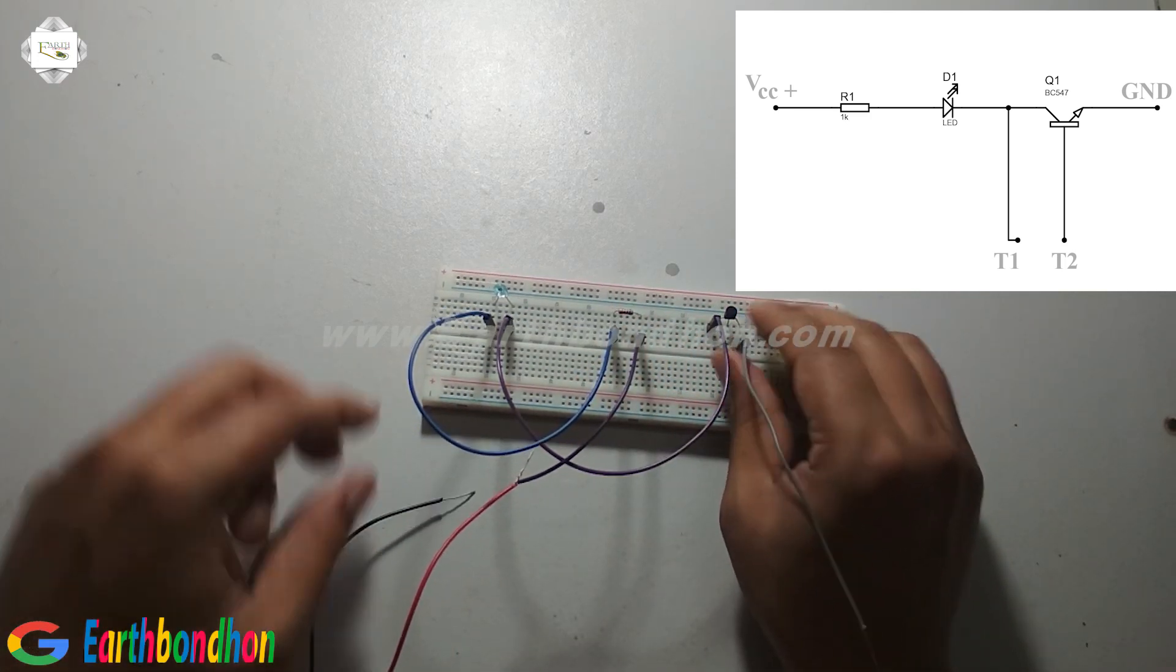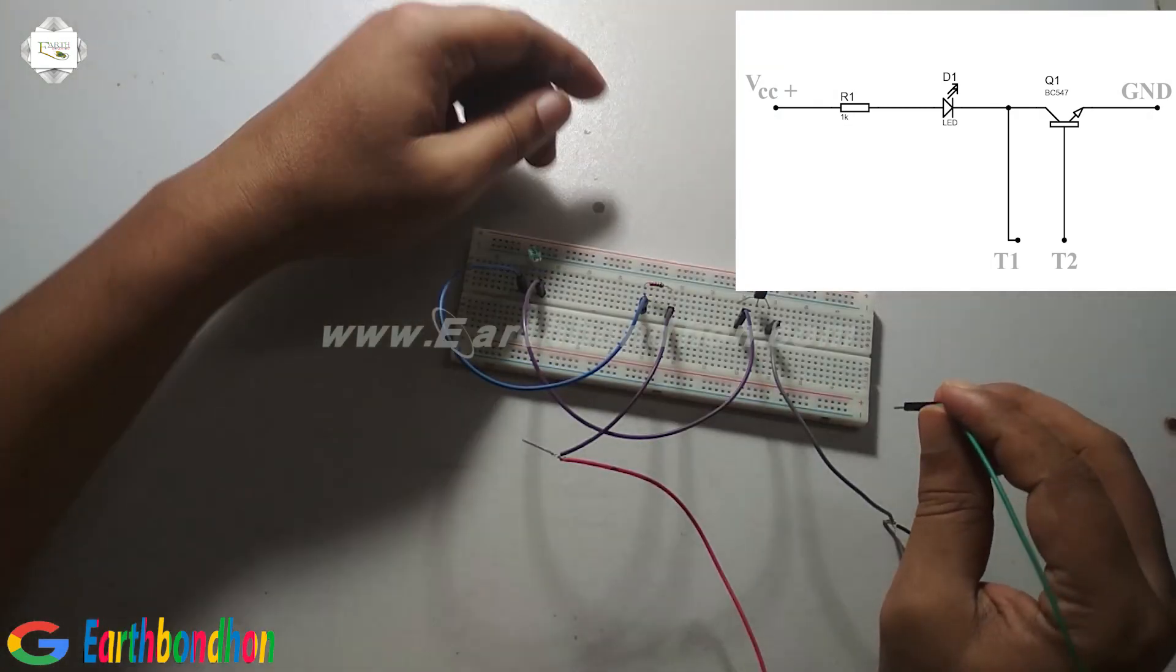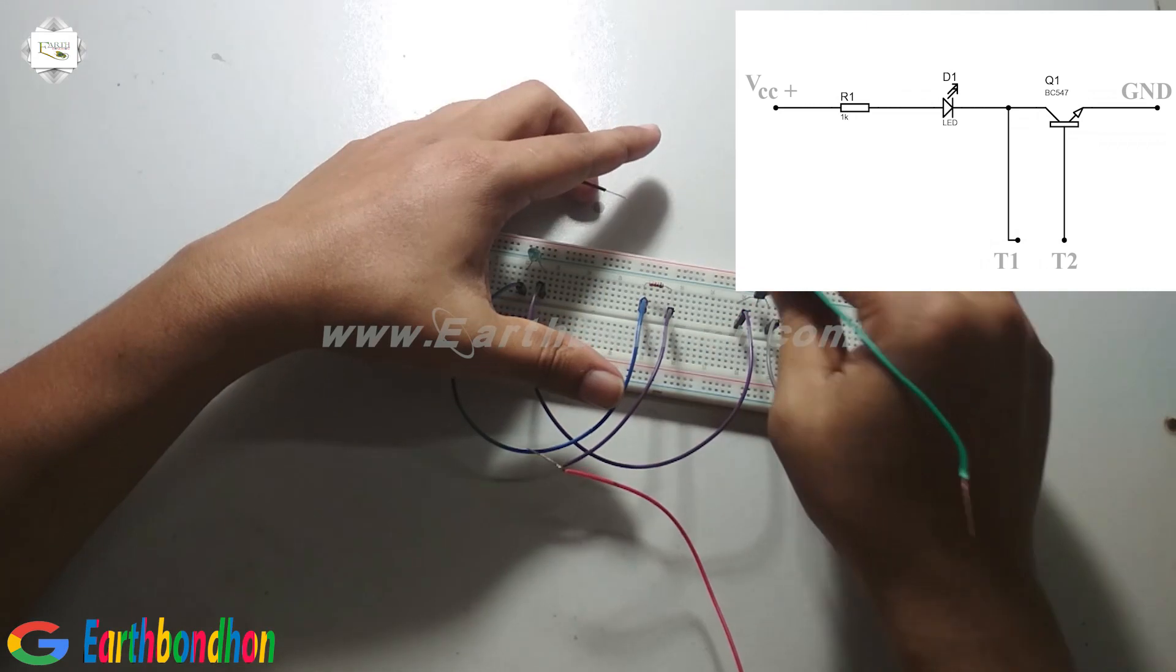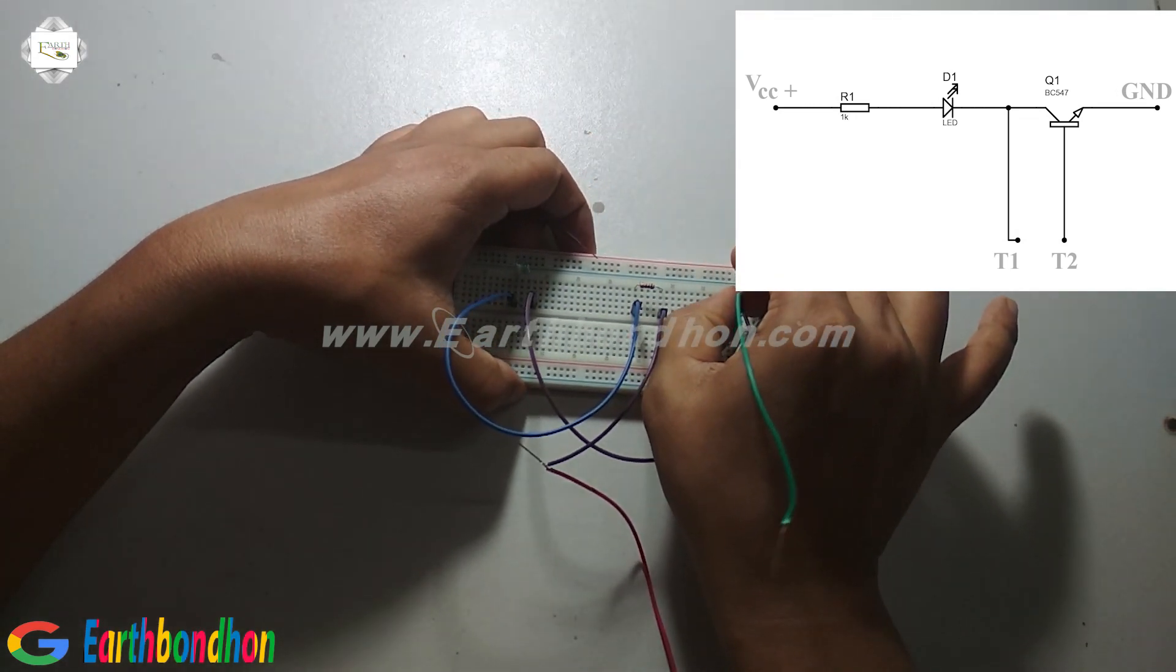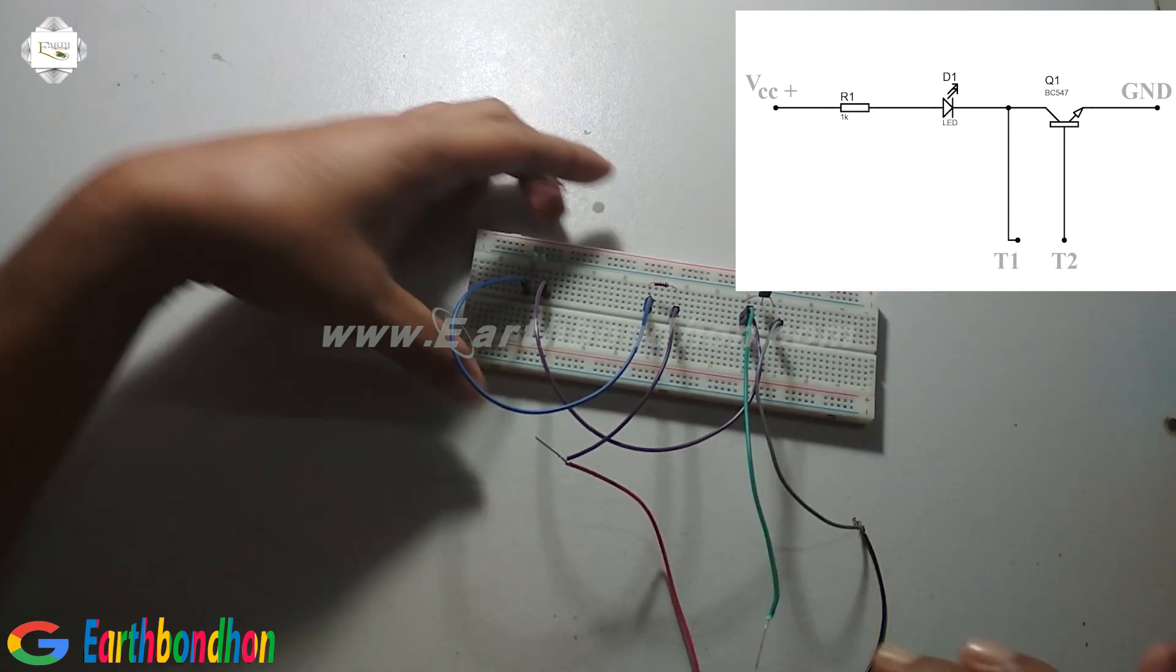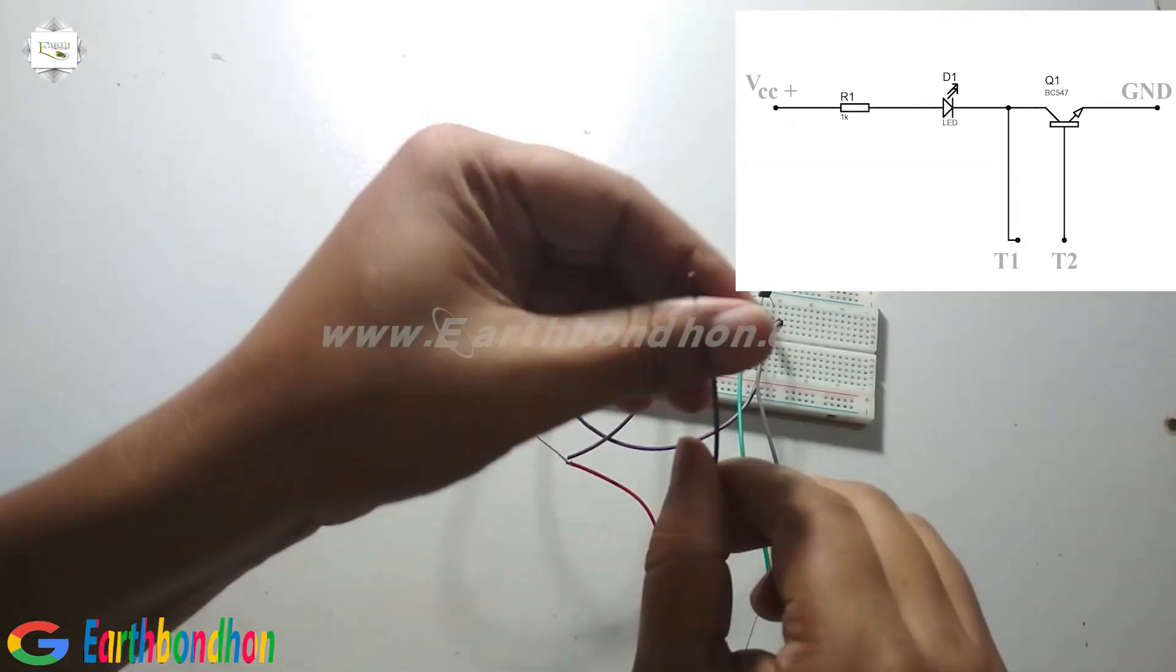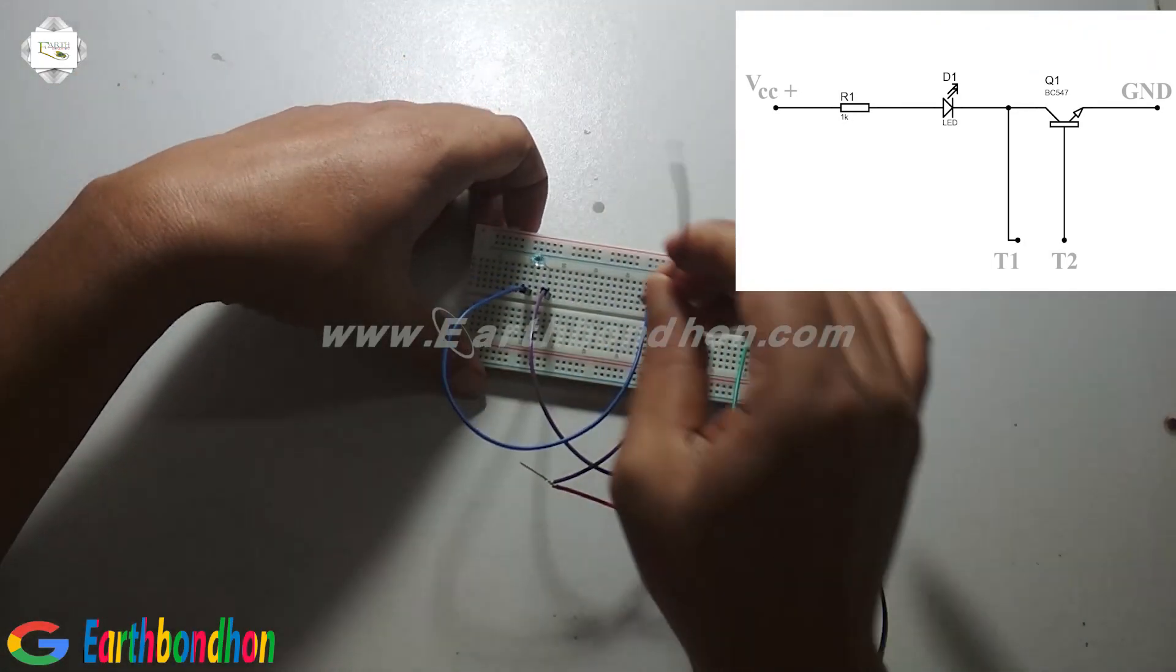This is 9 volt negative, and this is TASC terminal. First terminal is transistor emitter, and second is add.